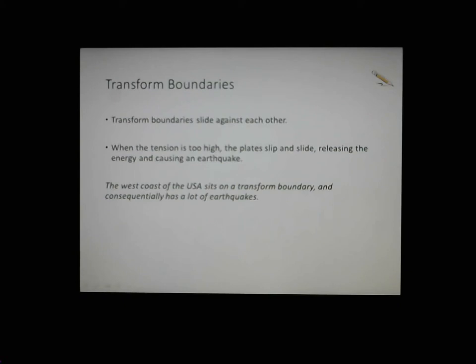All these processes will cause earthquakes, but transform boundaries only produce earthquakes. The west coast of the US, near Los Angeles all the way up to San Francisco, sits on a transform boundary and has a lot of earthquakes. There was a massive earthquake in San Francisco many years ago that destroyed the whole city — it had so much energy the city was just flattened. They rebuilt it, which might seem bold, but these transform boundaries — this is the biggest transform boundary we need to worry about — it's a good one to remember for exams.